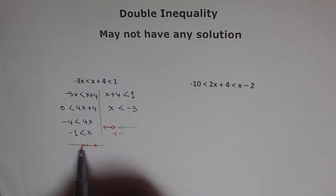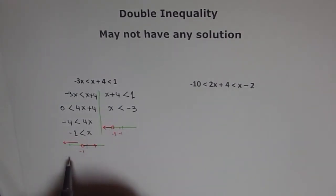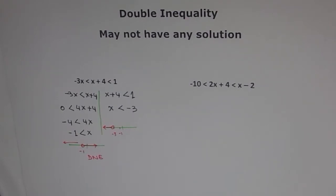Now, do we have anything common between the two? Well, this one is going from here to here and this one is going from here to here. There is nothing common. Therefore, we say that the solution does not exist. So there is no solution to this inequality. Now, let's try the other one.